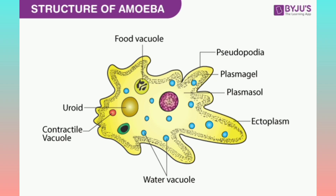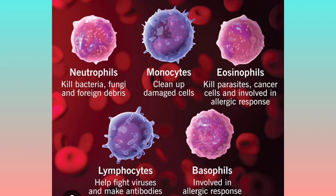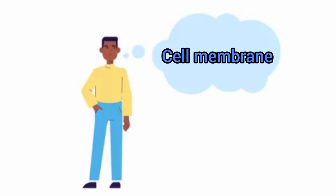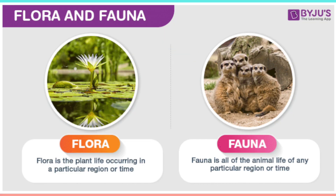Single-celled organisms like amoeba and the white blood cells of human blood can also change their shape. Can you guess which part of the cell gives it its shape? Yes — the cell membrane provides shape to the cells of plants and animals.